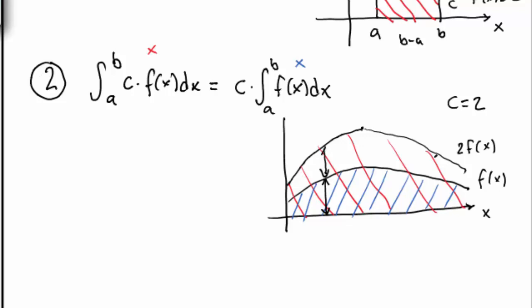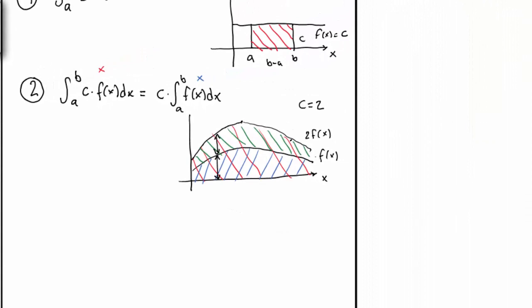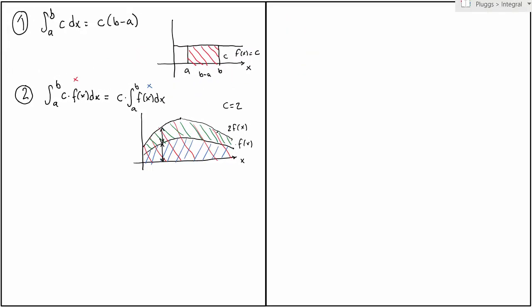and this distance here is precisely the same. We get the graph of 2 times f of x simply by doubling the y value of f of x. That, in turn, means that this green area marked here must be precisely the same as the blue area. So adding the blue and the green area will give me the red area.